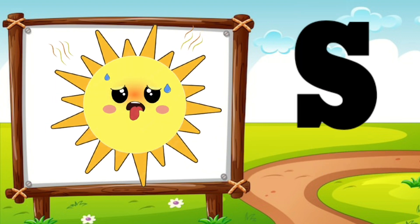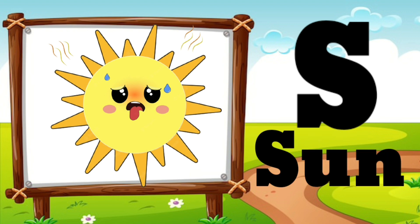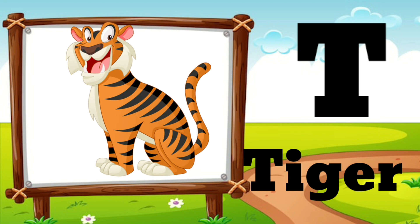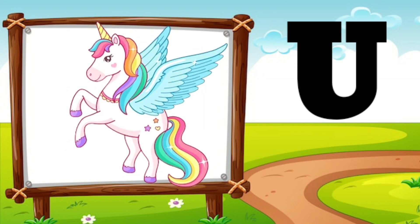S is for Sun. T is for Tiger. U is for Unicorn.